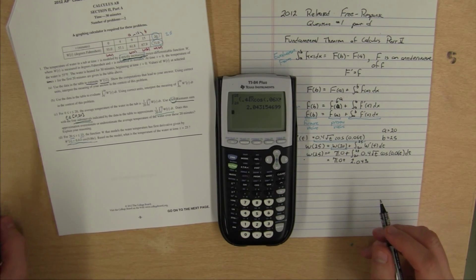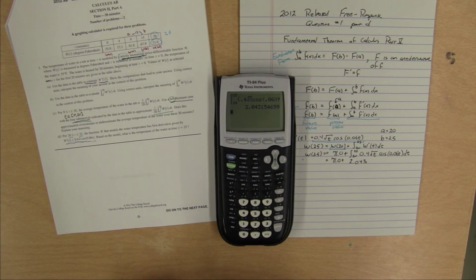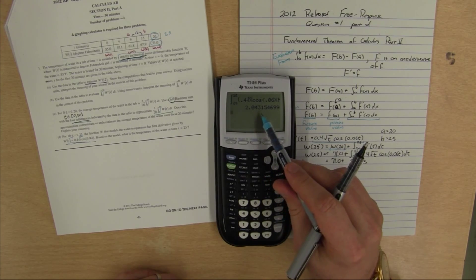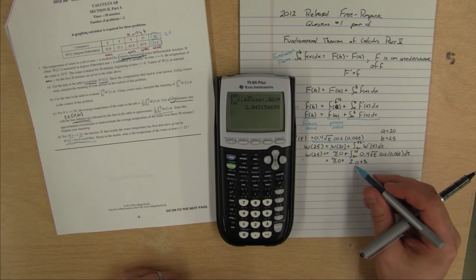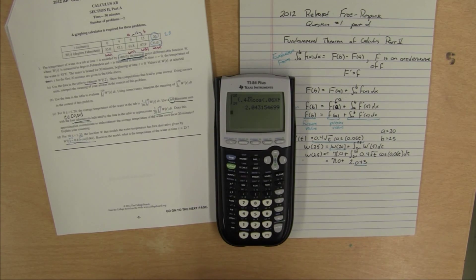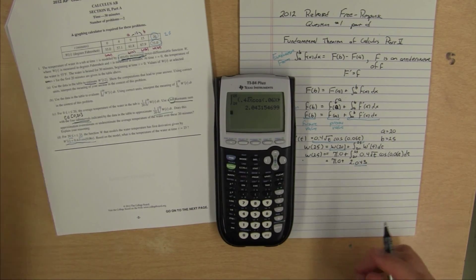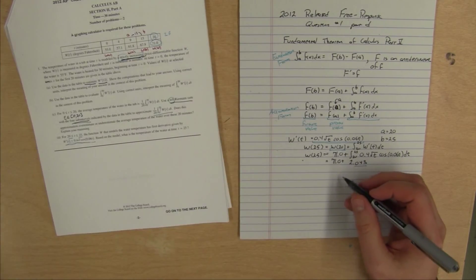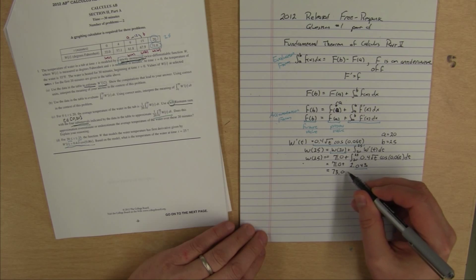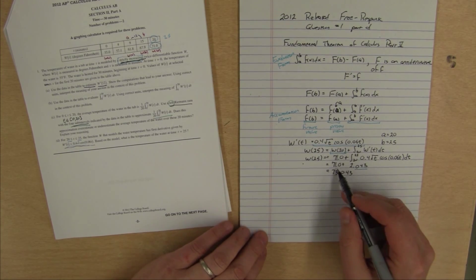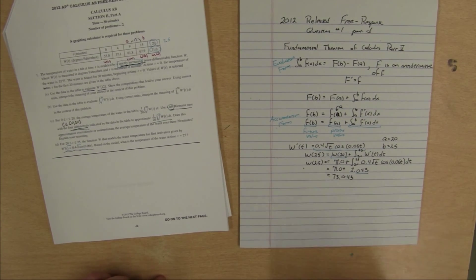For our AP free response question, we want three decimal places rounded or truncated. In this case, whether we round or truncate, we're going to get .043 for our three decimal places. Now I know that w of 25 is equal to 73.043. If you want to do this part in your calculator, you can. But it's easy enough to just add those together. That's w of 25.